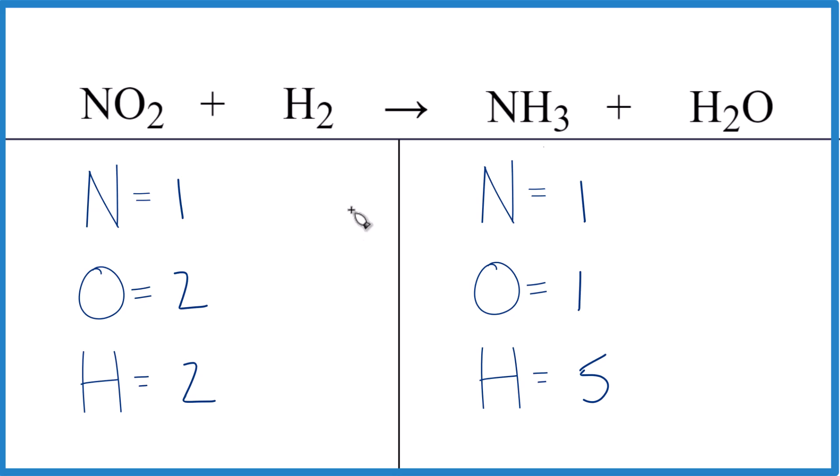Nitrogens are balanced. Oxygens, we'll put a two right here and now we can see that we have one times two, two of those. We need to update the hydrogens though, and we have the three plus two times two is four, so we have seven of those.